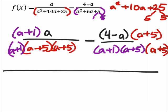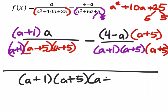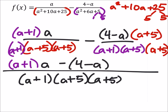And writing this now as one full fraction, I have my denominators, which are the same: a plus 1 times a plus 5 times a plus 5. And the numerator is still the same: a plus 1 times a minus 4 minus a times a plus 5.